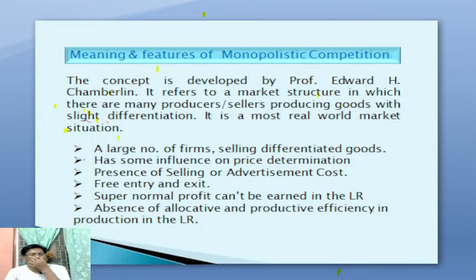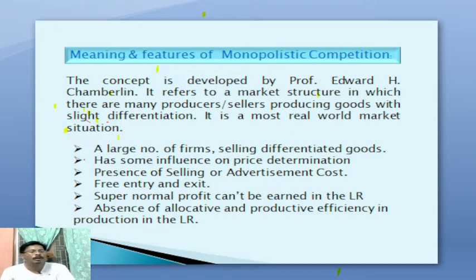From the name of this model, we can imagine that it includes two basic elements from two market models — one is monopoly, another is perfect competition. It is defined as a market model in which there are many producers or firms who are producing goods with slight differentiation in quality.